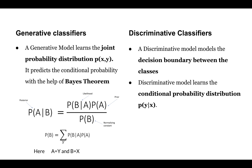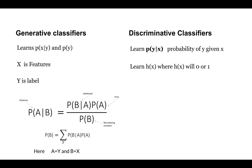The discriminative classifier models the decision boundary between classes. Mathematically, it learns the conditional probability distribution — directly getting P(Y|X). Here, X is the feature and Y is the label. The discriminative model learns Y given X. For example, in a regression model, the hypothesis h(x) outputs zero or one — that is why it is called a discriminative model.